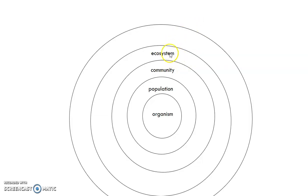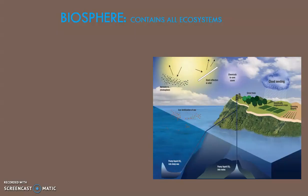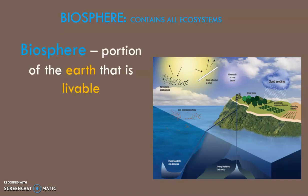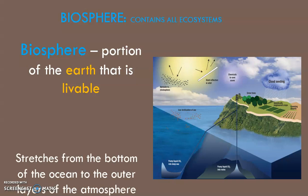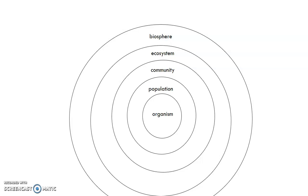A biosphere contains all ecosystems. If you have an area of living and non-living things here and another there, when you put all those ecosystems together you create a biosphere. I think of the biosphere as the Earth — all the living parts of Earth together. It's a portion of the Earth that is livable, going from the bottoms of the oceans to the outer layers of the atmosphere — everywhere on Earth considered livable.